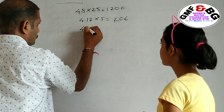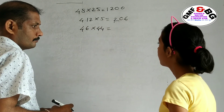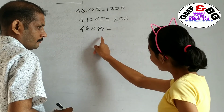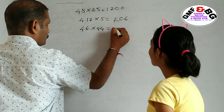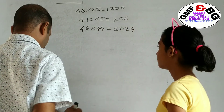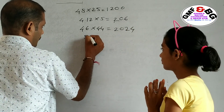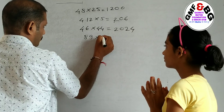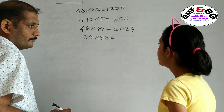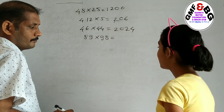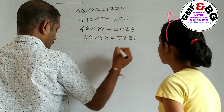Next: 46 × 44 equals 2024. Next: 89 × 98 equals 7282.